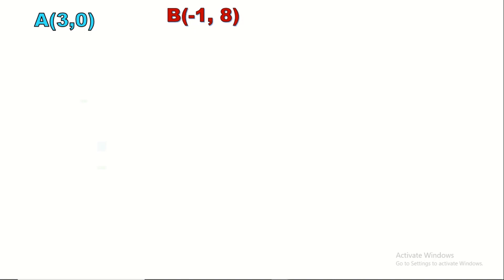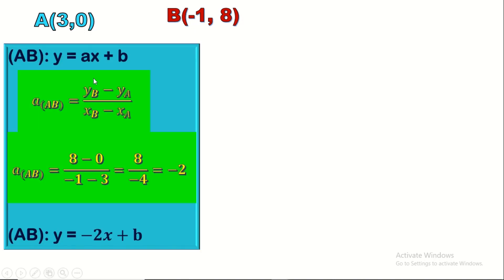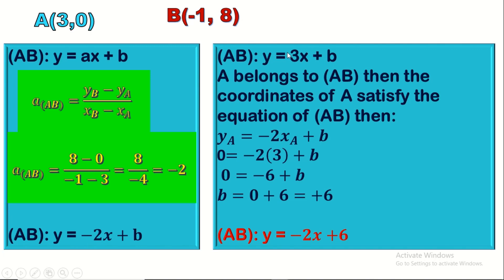Another method: the general form of a straight line is y = ax + b, where a and b are unknowns. The slope a = (yB - yA)/(xB - xA) = -2. So AB has equation y = -2x + b. To find b, we use point A which belongs to AB: its coordinates satisfy the equation. Replacing yA = 0 and xA = 3 gives b = 6. Therefore the equation of AB is y = -2x + 6.